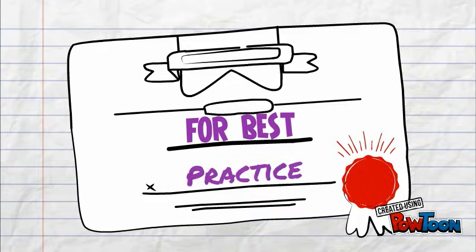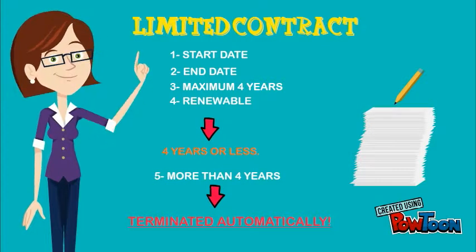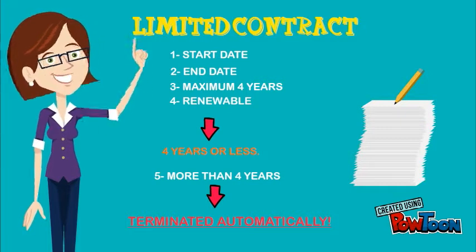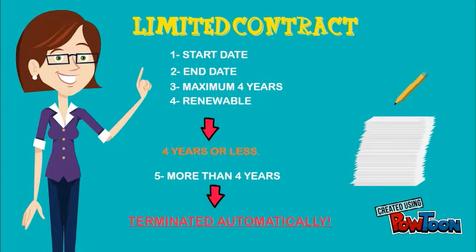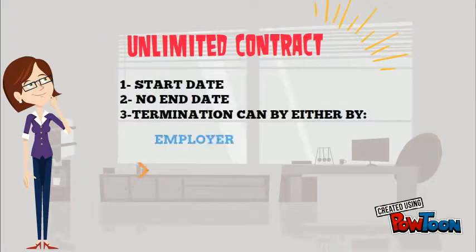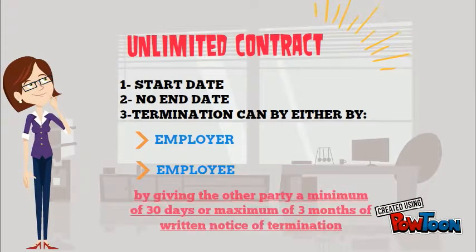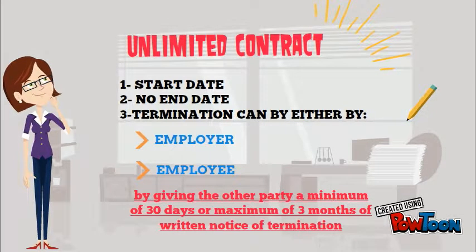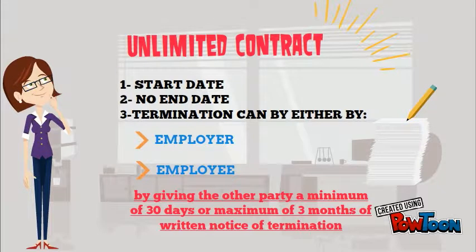Permit to practice: If you have a limited contract, make sure there is a specific start date, an end date, and a maximum of 4 years — terminable at 4 years or less. If it is more than 4 years, the employee will be terminated automatically. If you have an unlimited contract, make sure there is a start date but no end date, and termination can be done either by the employer or employee by giving the other party a minimum of 30 days or a maximum of 3 months of written notice of termination.